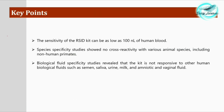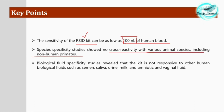Key points: the sensitivity of the Reced kit can be as low as 100 nanoliters of human blood, demonstrating high sensitivity and reliable results. Species specificity studies showed no cross-reactivity with various animal species, including non-human primates. Biological fluid specificity studies also revealed the kit is not responsive to other human biological fluids — such as semen, saliva, urine, milk, amniotic fluid, and vaginal fluid — so only human blood can be detected through this immunochromatographic kit for human glycophorin A antigen.